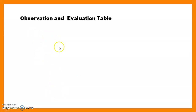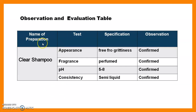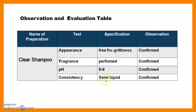Now we see the observation and evaluation table. It should contain the name of preparation, test, specification, and observation. Our preparation is clear shampoo. Appearance: free from grittiness — confirmed. Fragrance: perfumed — confirmed (we added flavor/fragrance). pH: between 5 to 8 — confirmed. Consistency: semi-liquid — confirmed.